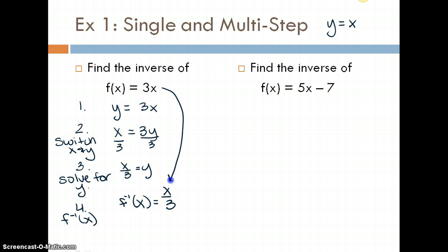The original and the new are inverses. When we graph them, you will understand what I meant by it is a reflection over the line y = x. So for the second one, it's multi-step. Let's find the inverse of f(x) = 5x - 7.